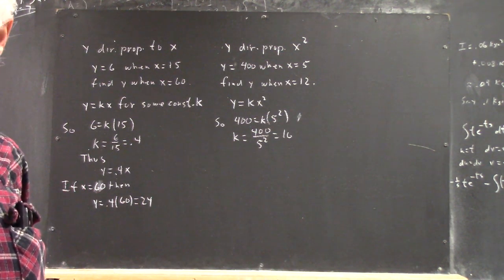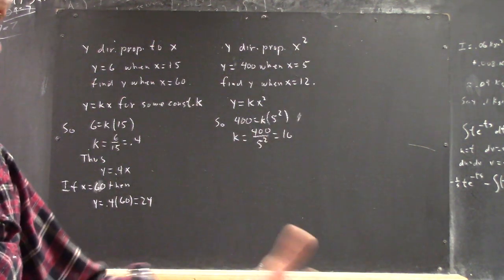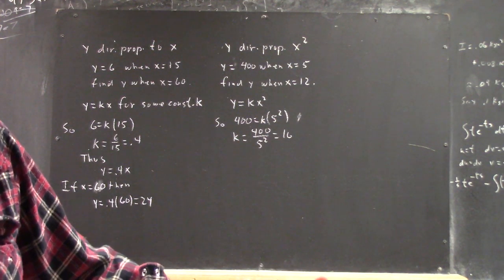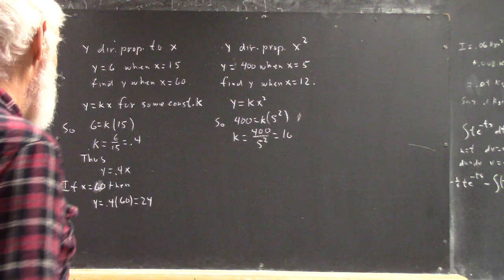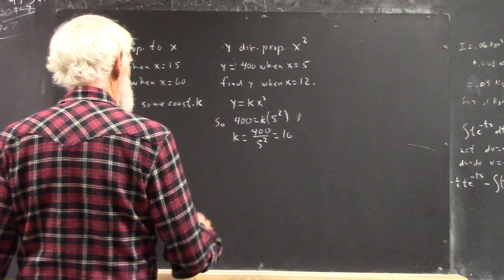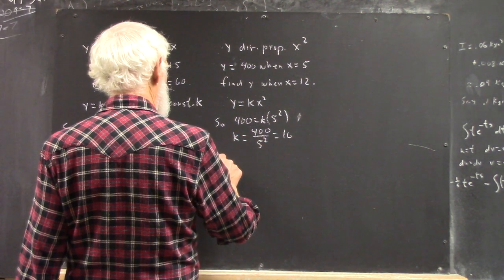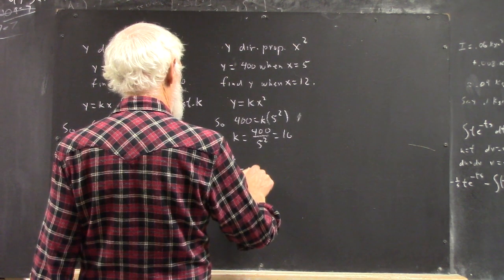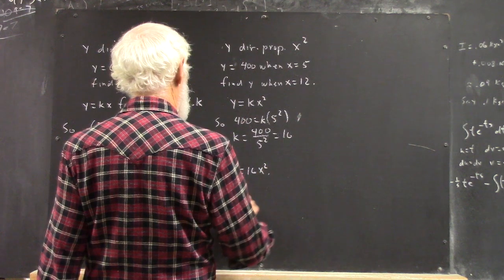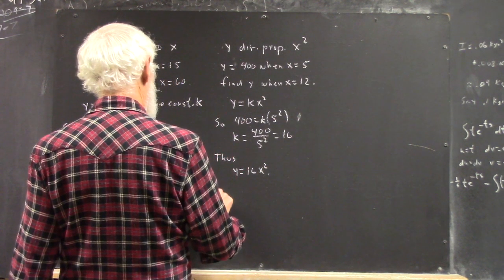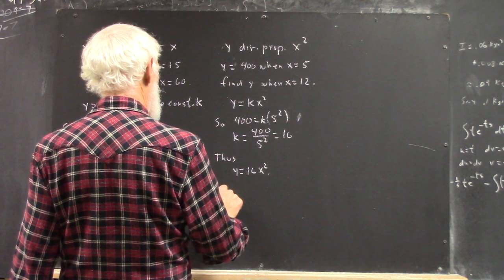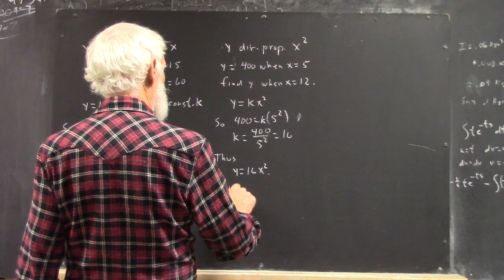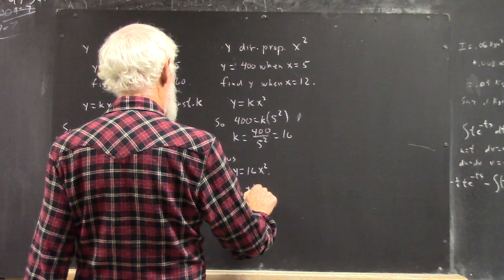There are 4 25s in 100, and it got 400, so there better be 16 25s in 400. Okay, if x equals 12...